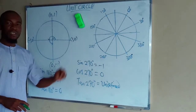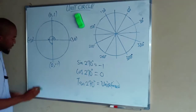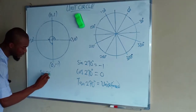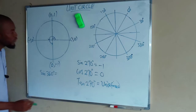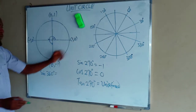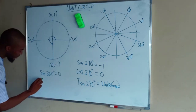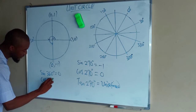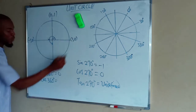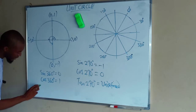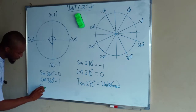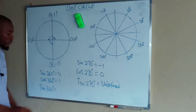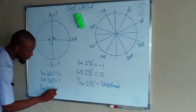Now let us move on to the last one, which is 360°. Sine 360° equals the corresponding value of y, which is 0. Cos 360° equals 1. And tan 360° equals 0 divided by 1, which is equal to 0.